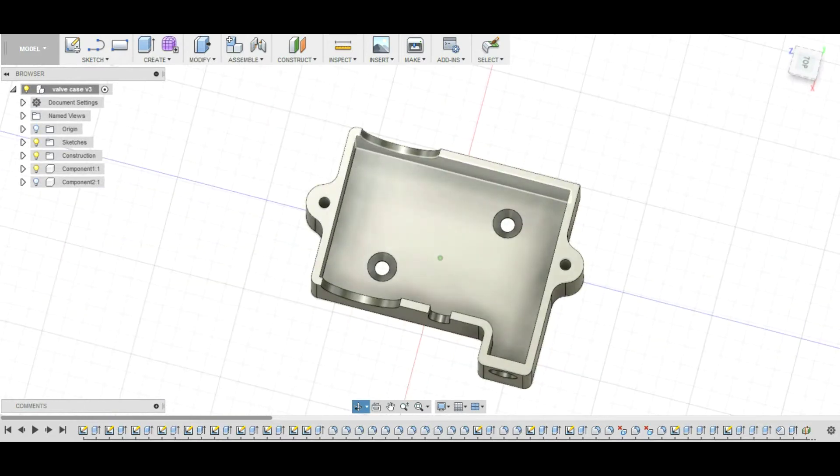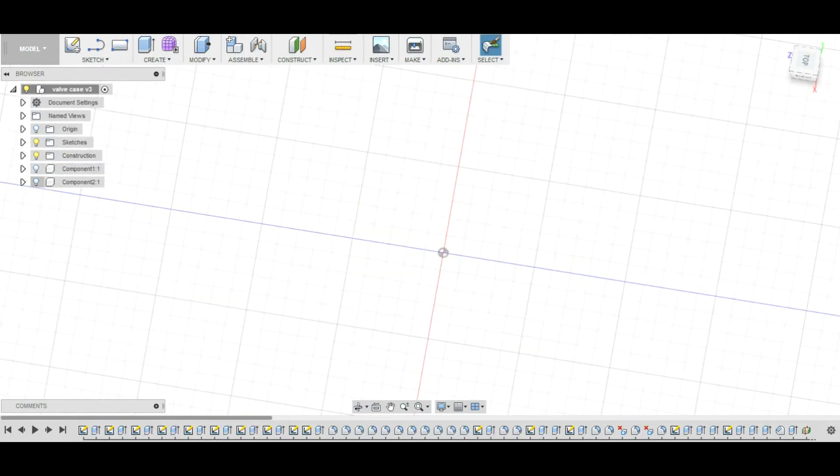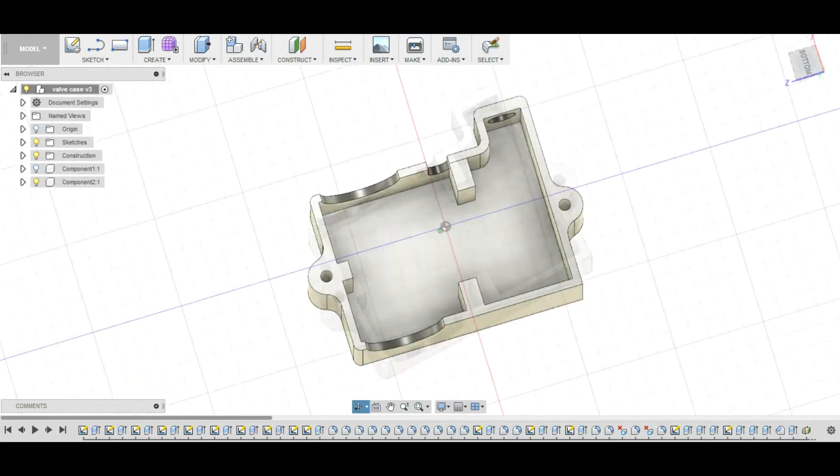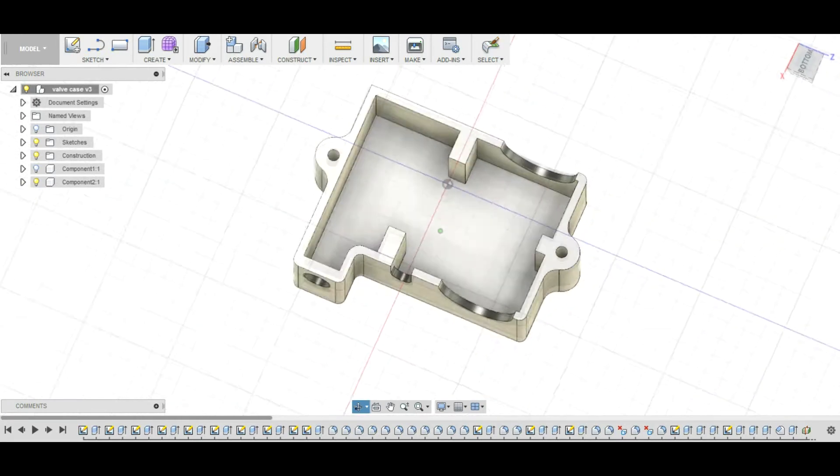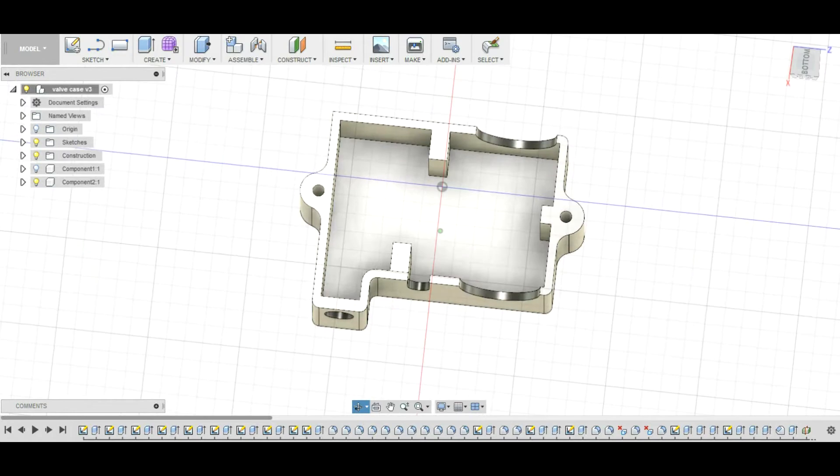These 12 volt solenoid valves can be had cheaply off the internet. They're generally uncased, hard to mount and exposed to the elements. So what I've done is I've designed a case in Fusion 360 to help with some of those problems.